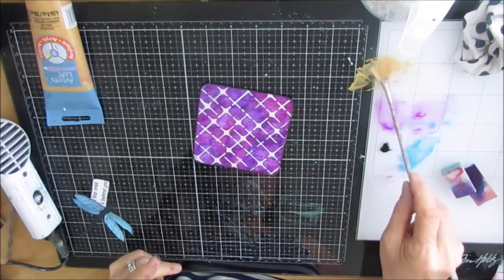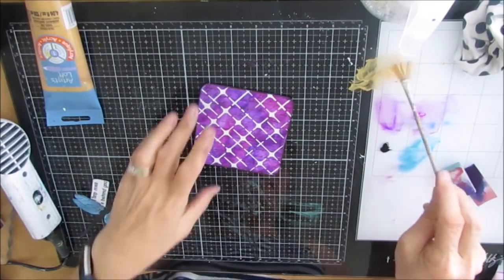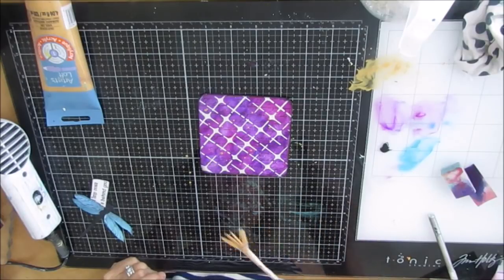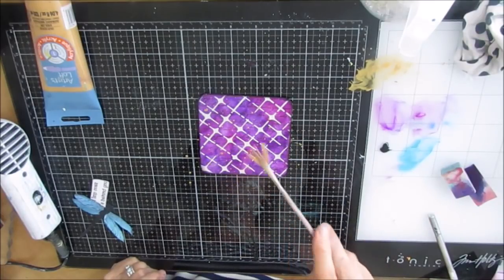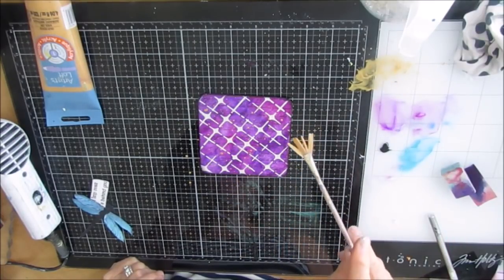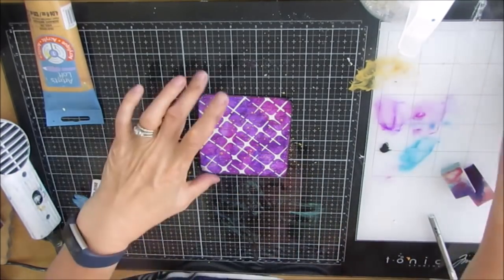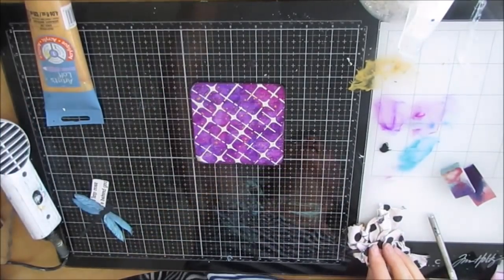So I'm thinning out some gold paint and grabbing my fan brush and I'm going to splatter. And the yellow gold is going to pop because it's across the wheel from purple on the color wheel.